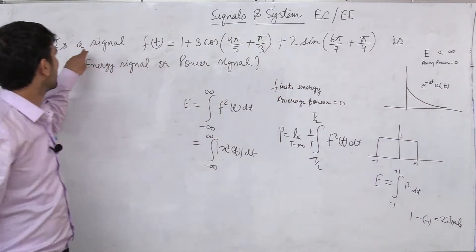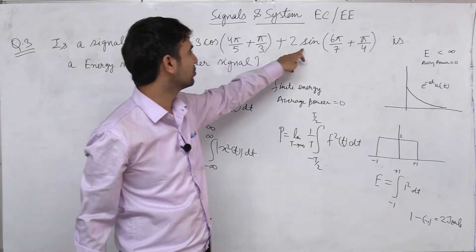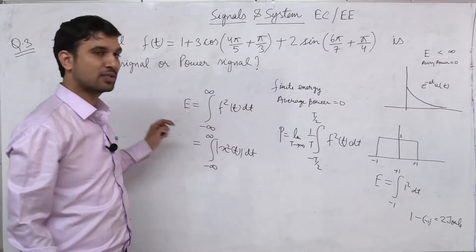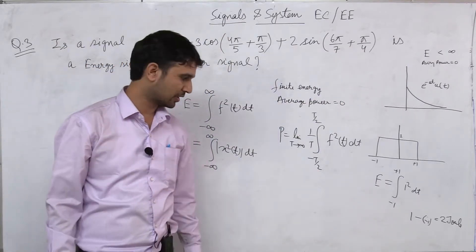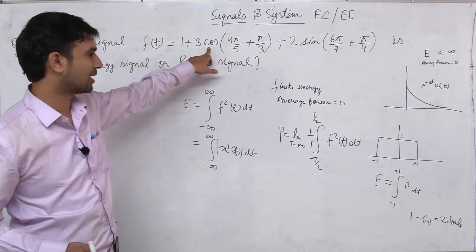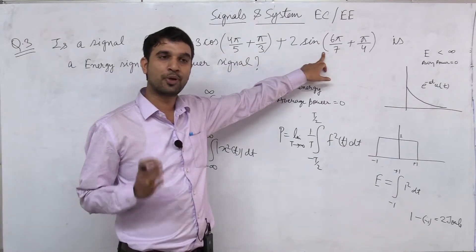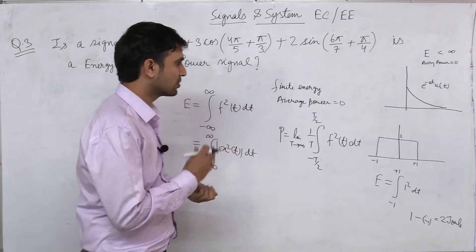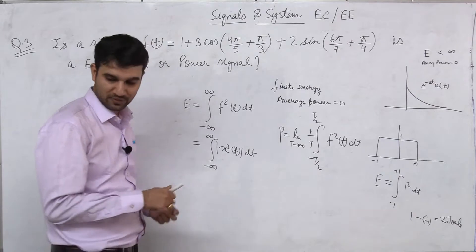The question is: the signal f(t) = 1 + 3cos(4π/5 + π/3) + 2sin(6π/7 + π/4) — is it an energy signal or a power signal? We discussed last time that periodic signals — cosine and sine signals — are all periodic. So periodic signals are all power signals. All sinusoidal and cosinusoidal signals are power signals. So we will find out the power.